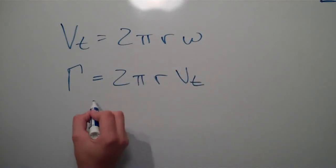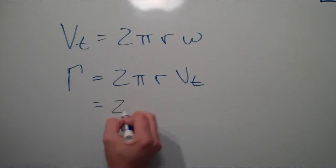We can use this velocity to find the vortex strength created by the spinning cylinder.